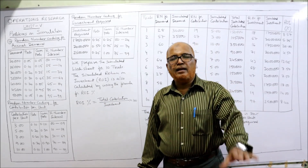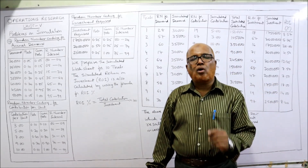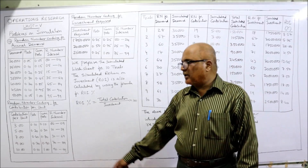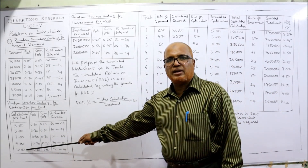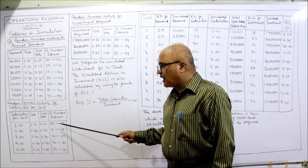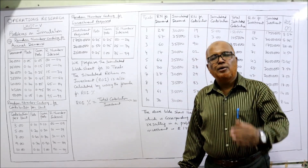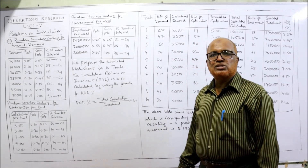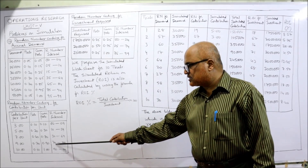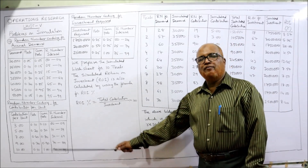Now the random number interval for contribution per unit. The contribution values are 3, 5, 7, 9, and 10 rupees with given probabilities. Taking cumulative probability, the first value is 0.10. The random number intervals are: 00–09, 10–29, 30–69, 70–89, and 90–99.